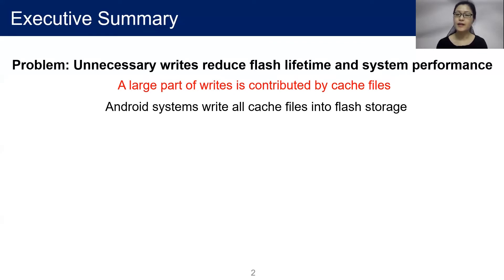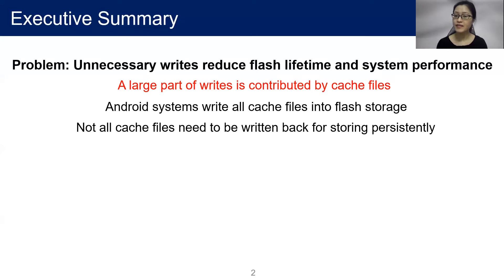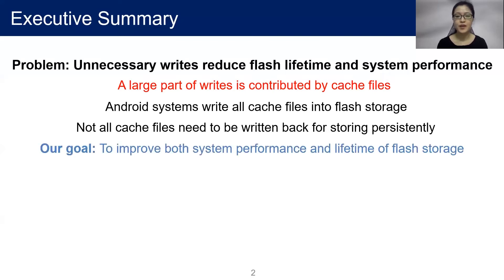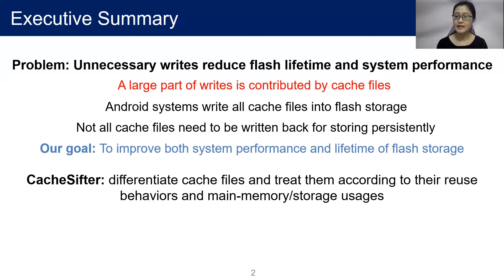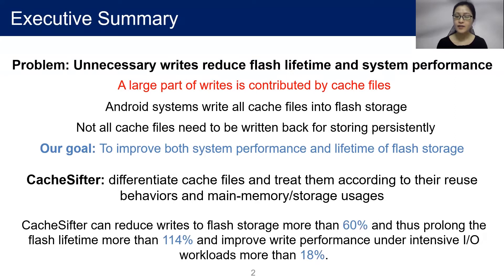To improve performance, Android systems temporarily store all the cache files in mobile devices to avoid redownload overhead. However, we find that not all cache files need to be stored persistently, so some of them do not need to be written back to flash storage. The goal of this paper is to improve both flash storage lifetime and system performance. The key idea of CacheSifter is to differentiate cache files and treat them according to their reuse behaviors and memory/storage usage. Our evaluation results show that CacheSifter can reduce writes by more than 60%, and thus can much prolong flash lifetime and improve system performance.